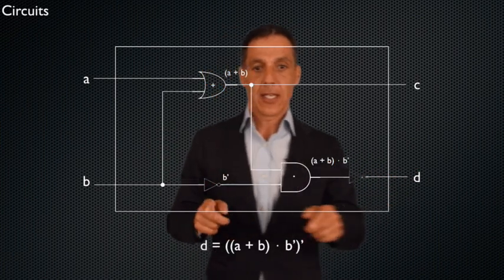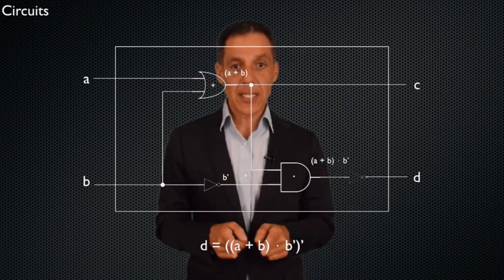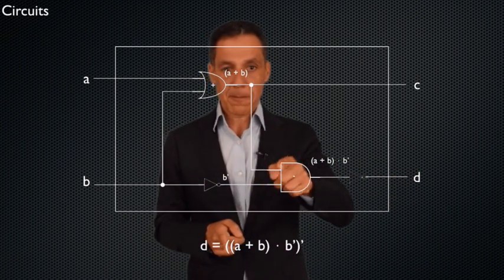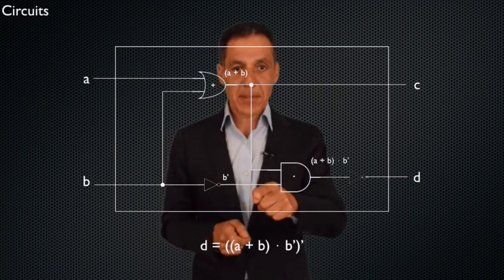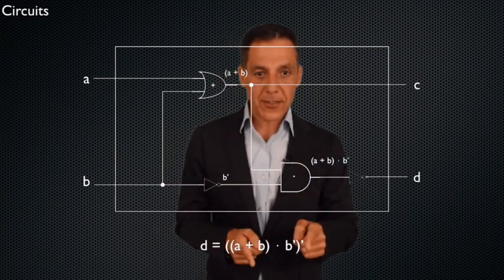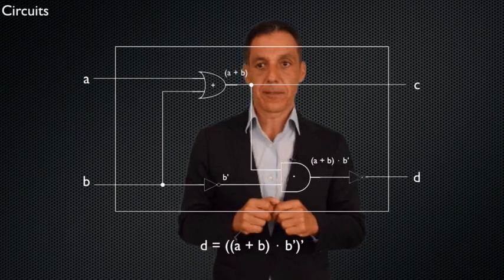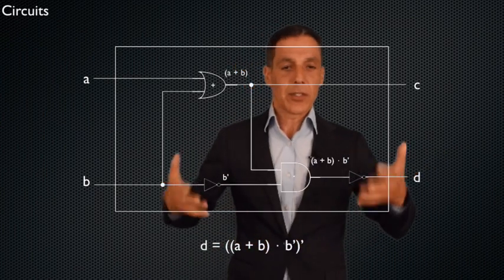So the expression D is equal to A or B - it's coming in from up here - and not B. And then the whole thing is NOTted. There's a little apostrophe there. Okay. So it's a circuit.